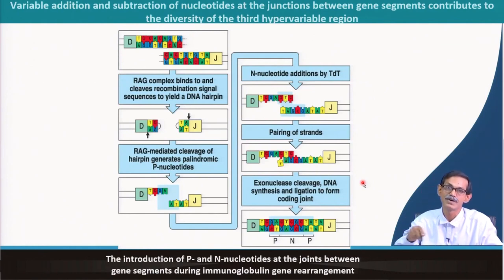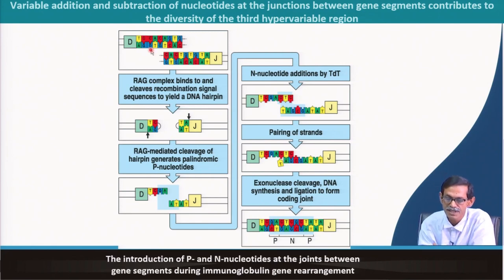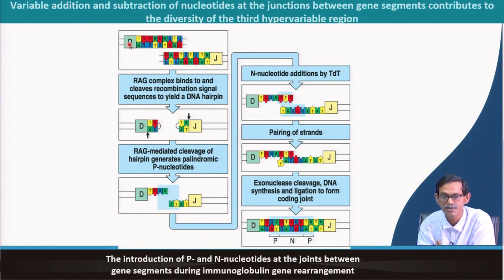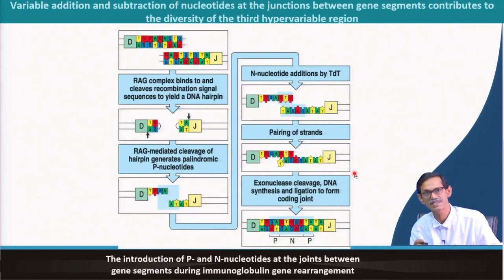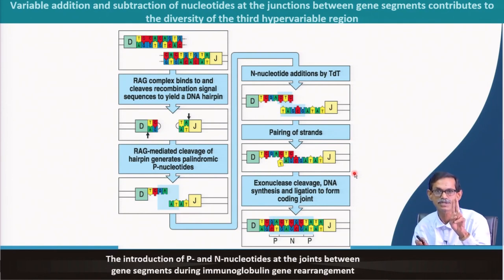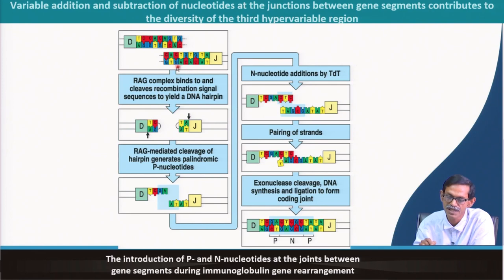Here is the magic of how TDT works — a wonderful mechanism. This sequence, in the previous slide, shows a variable region and J segment. Here the example is given with D and J region, but it is true for any joining — VJ, DJ, or VD — a similar thing happens. In the D segment, this is the last nucleotide, so D ends here and J ends here.